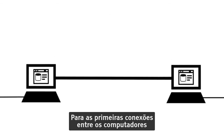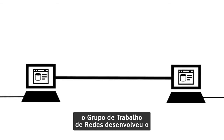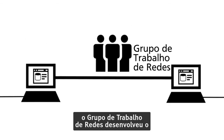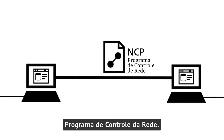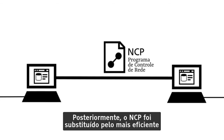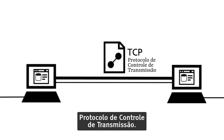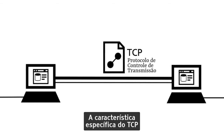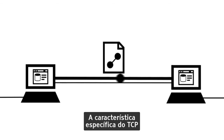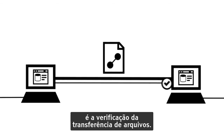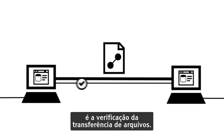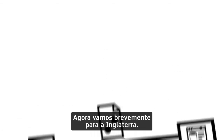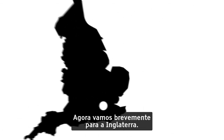For the first connections between computers, the Network Working Group developed the Network Control Protocol. Later on, the NCP was replaced by the more efficient Transmission Control Protocol. The specific feature of the TCP is the verification of the file transfer.